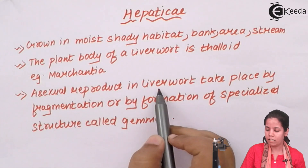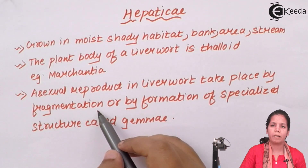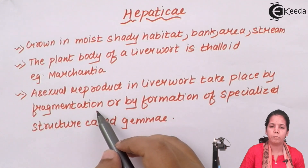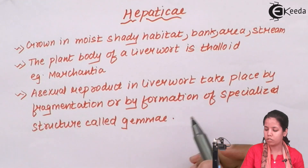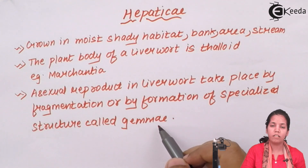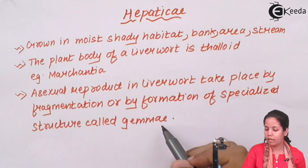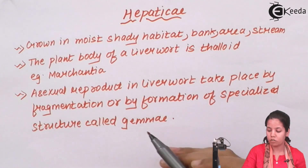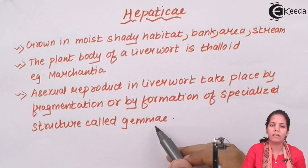Asexual reproduction in the Liverwort or Hepaticae plant takes place by the process of fragmentation — the plant body is broken down into multiple pieces and daughter cells are formed — or by the formation of specialized structures called gemmae. Gemmae are very similar to spores; inside the gemmae there are mature gametes, and once the gemmae are completely mature they are released on the ground and multiple plants are produced. Whether fragmentation or gemmae formation occurs depends on the climatic conditions and the vegetative or hibernation process the plant is going through.